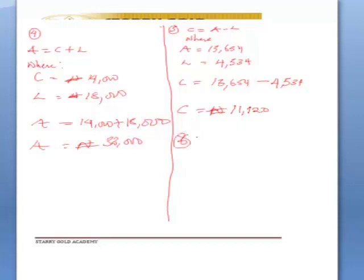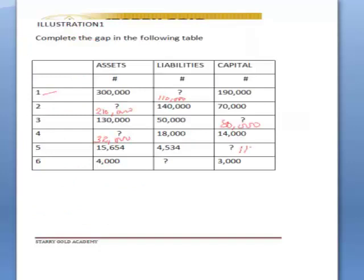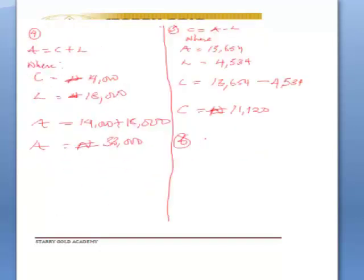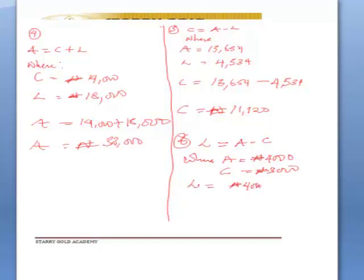Question six: we're looking for liability where A is four thousand and capital is three thousand. So liability equals asset minus capital, where asset equals four thousand and capital equals three thousand. Therefore L equals four thousand minus three thousand, so L equals one thousand naira.